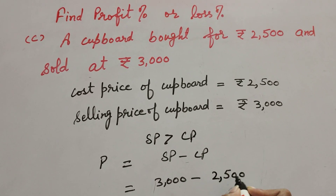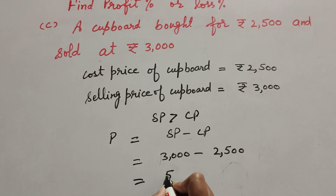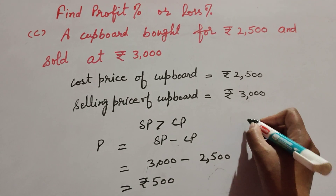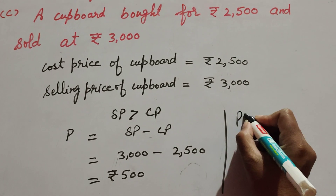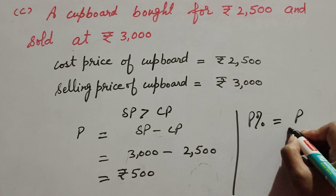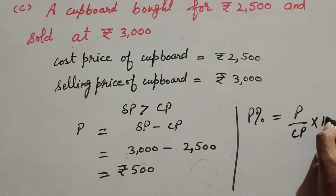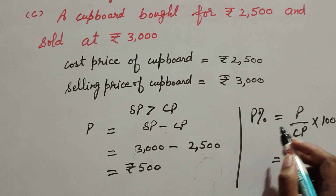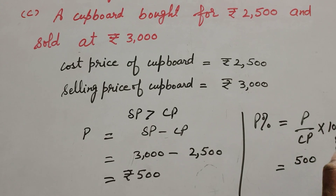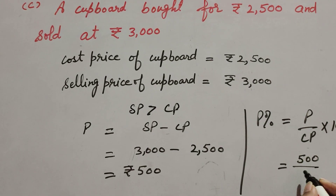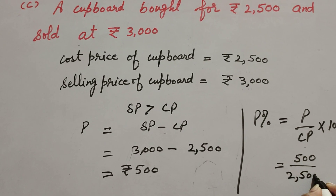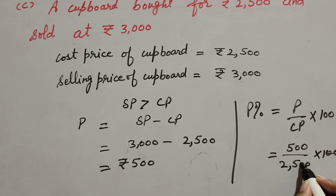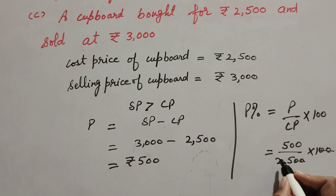Profit is equal to 500. Now we find profit percentage. It is equal to profit over cost price multiplied by 100. Profit is 500 over cost price 2500, multiplied by 100.